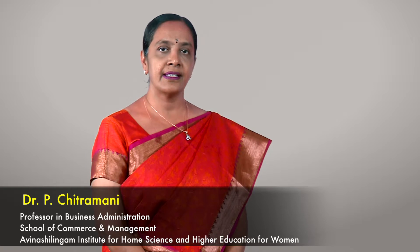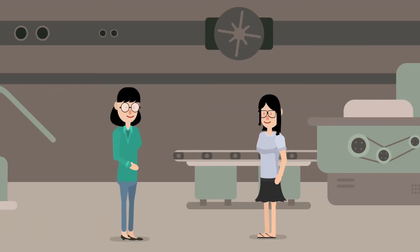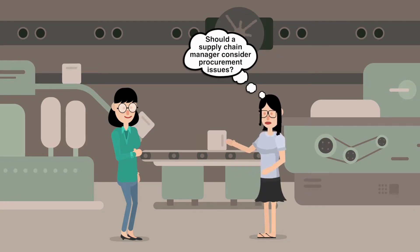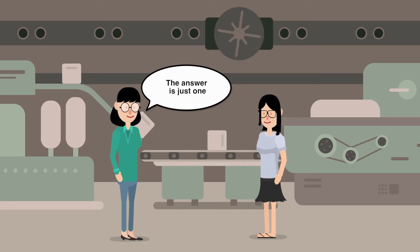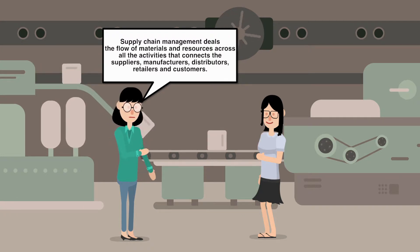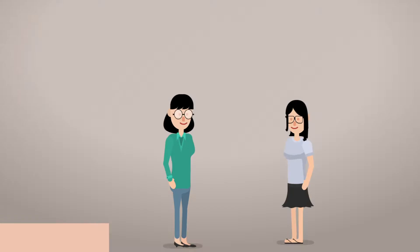In this lesson we will be discussing procurement management and its impact on supply chain. You may wonder why procurement management is considered a supply chain function and whether a supply chain manager should consider procurement issues for effective supply chain. The answer is that supply chain management deals with the flow of materials and resources across all activities connecting suppliers, manufacturers, distributors, retailers, and customers.